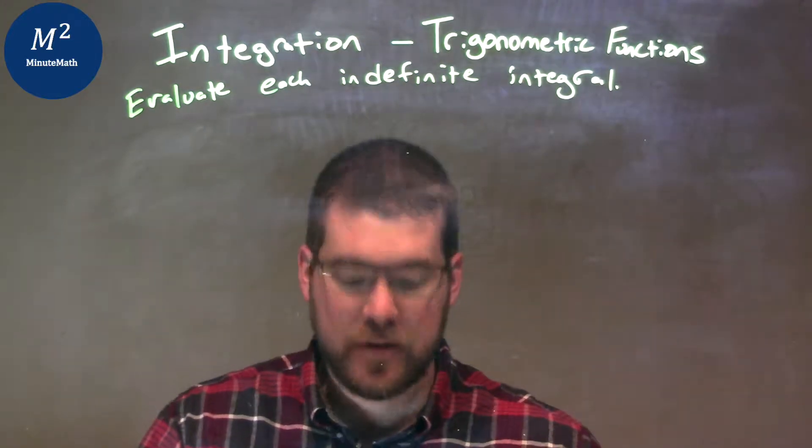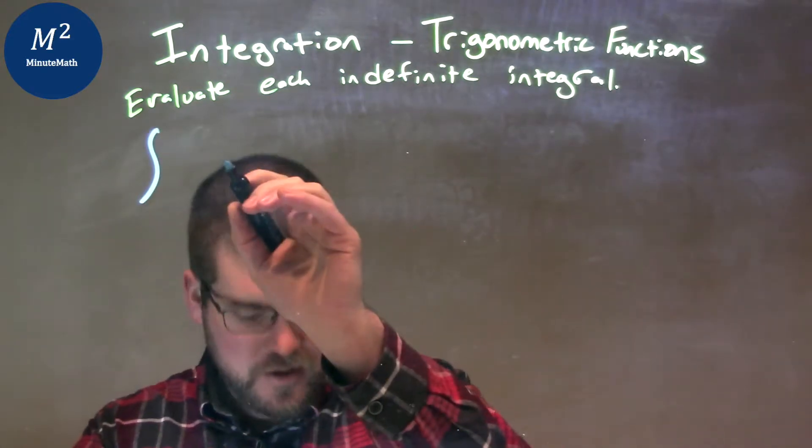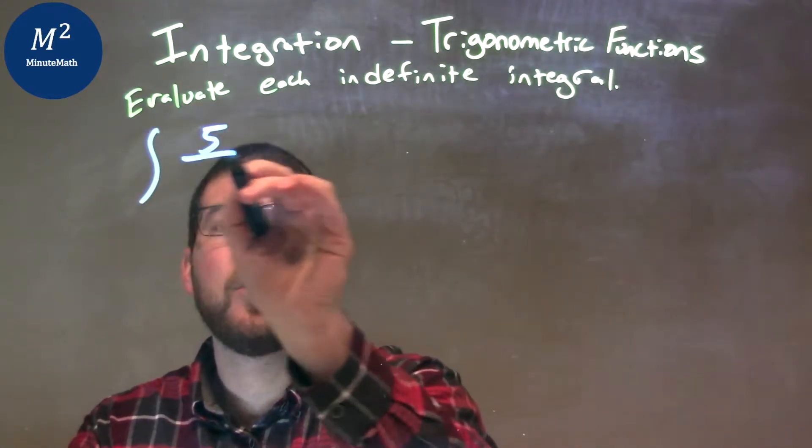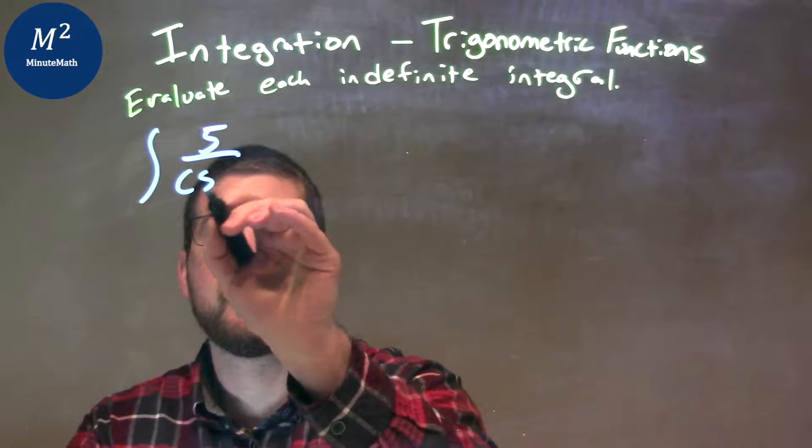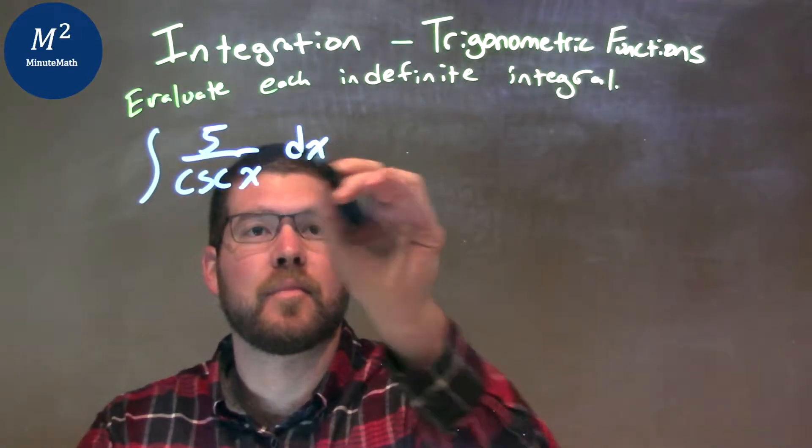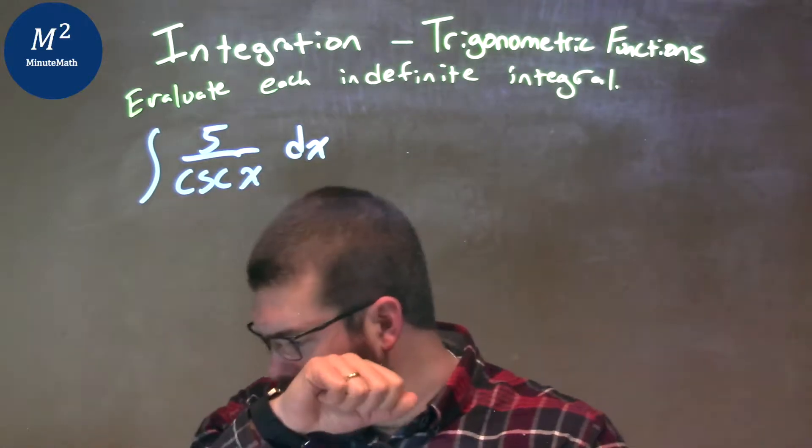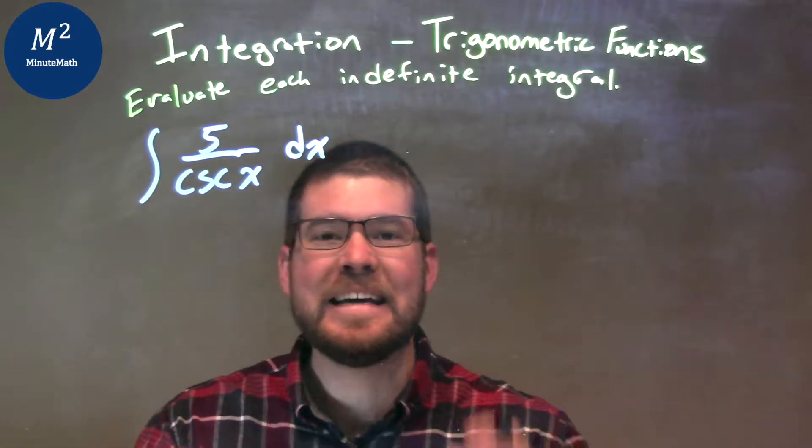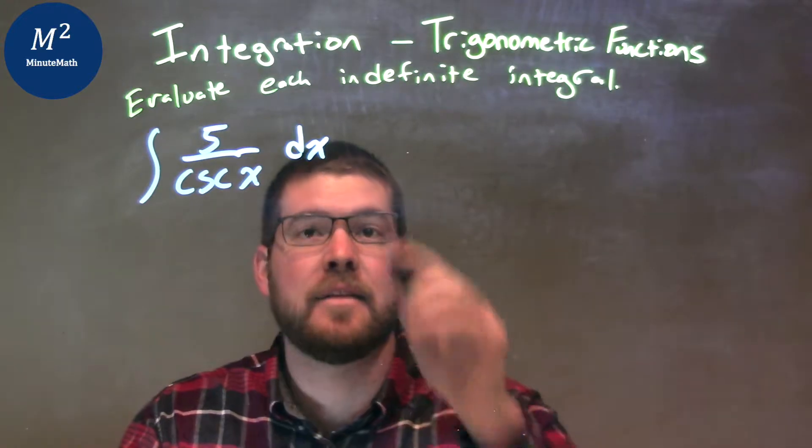So, if I was given this integral, the integral here of 5 over cosecant of x dx, excuse me. One of the things I like to do is simplify this before I take the integral.